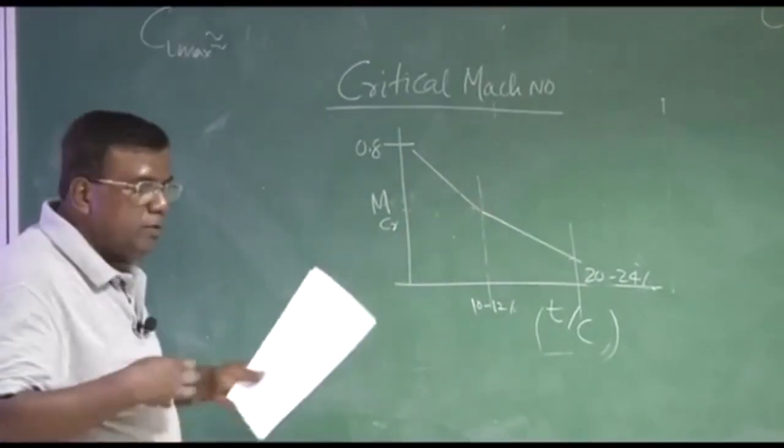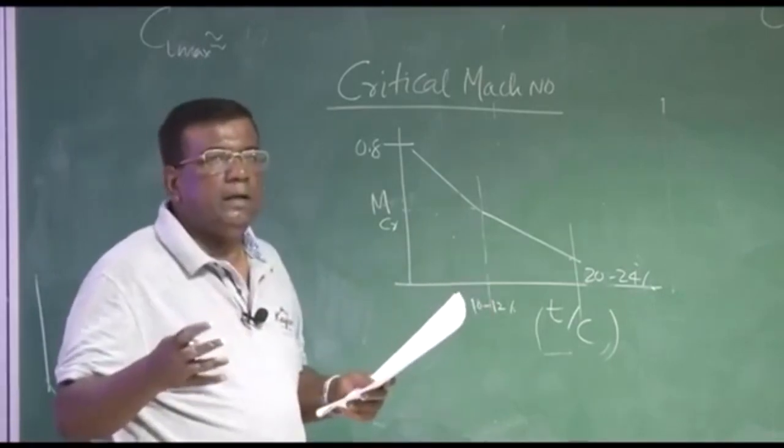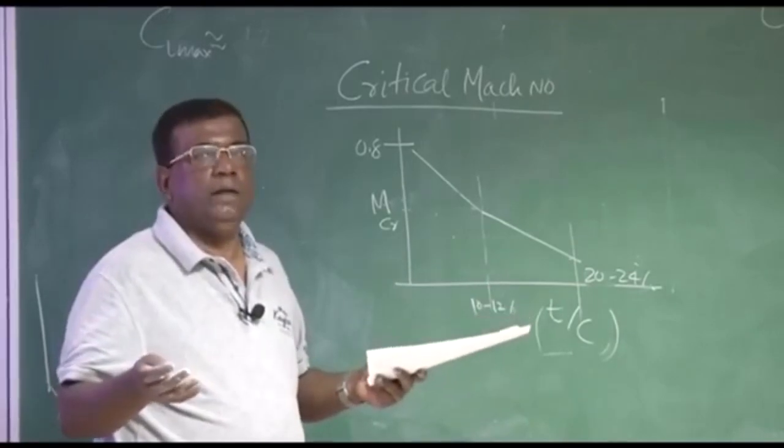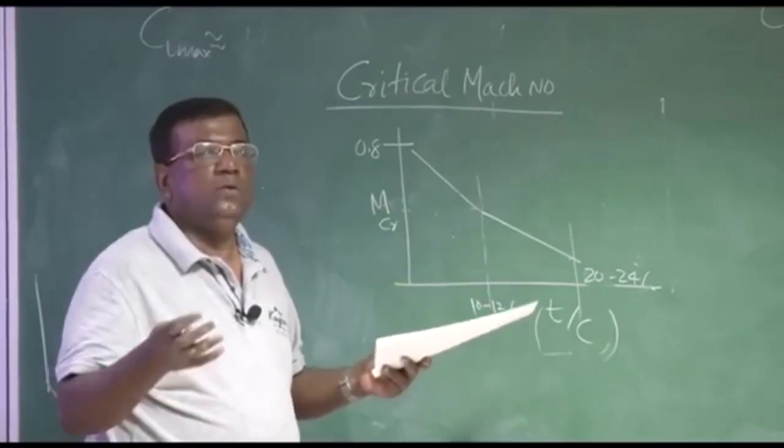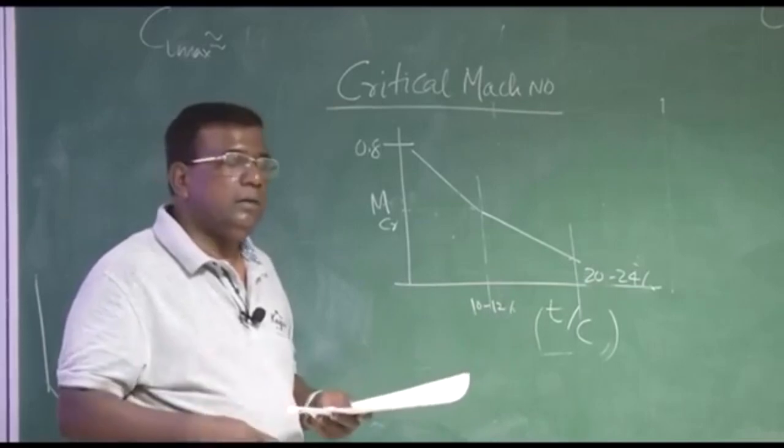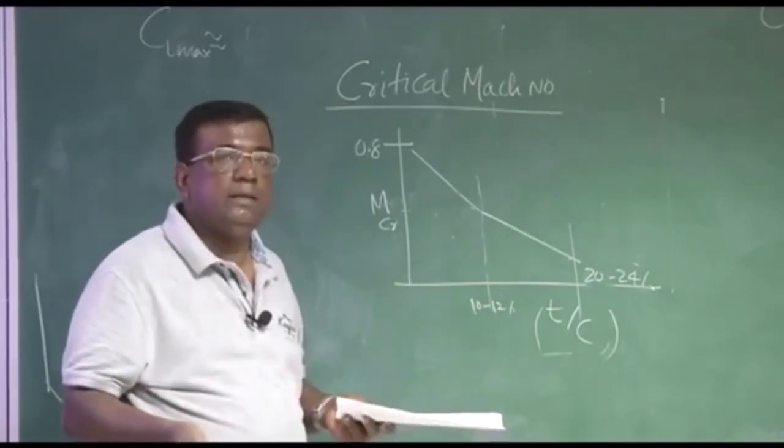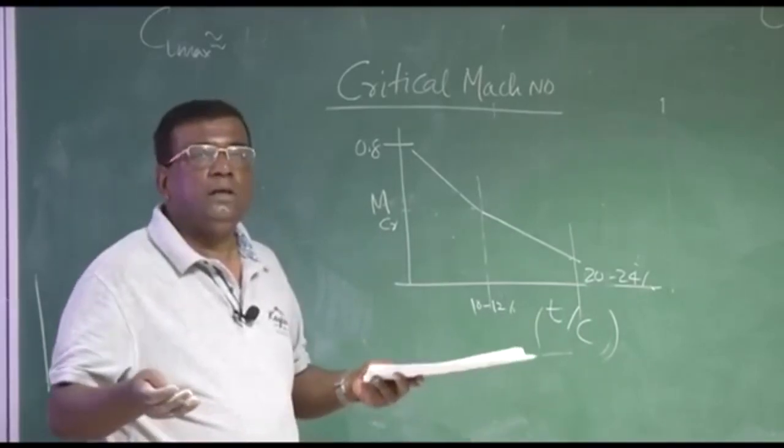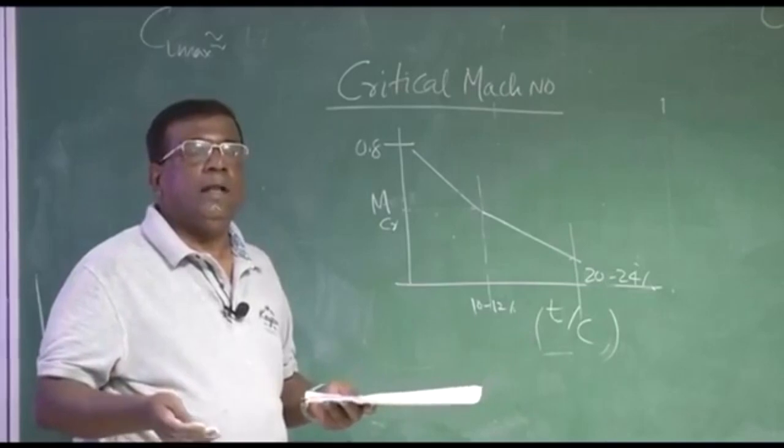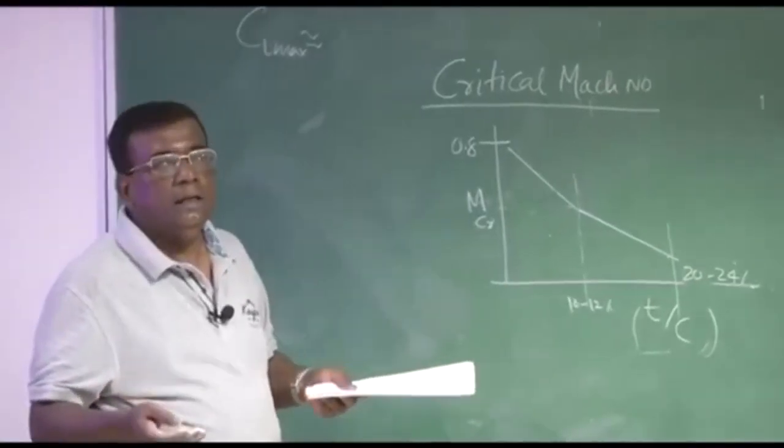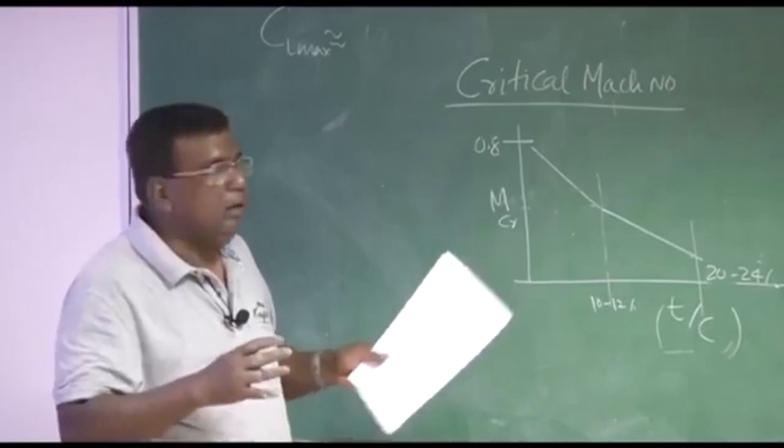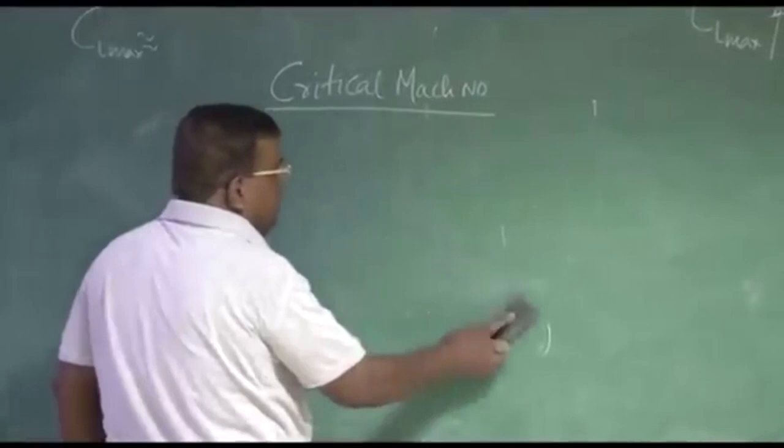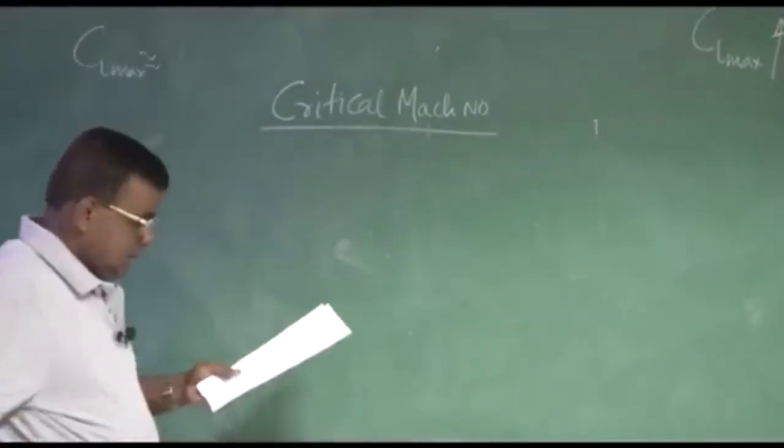Typically M critical changes with T by C, this sort of a variation you will find, and this may be around 20 to 24 percent T by C. There is a large drop in critical Mach number as you are going beyond 10 to 12 percent T by C, that is very important. So when you are trying to go for a high subsonic airplane, and if for some reason you want to go for a T by C higher, you know what sort of penalty you are going to pay. Either you, if you have no other option, if you are so destined you have to go for higher T by C, one understanding can help you try to give a sweep, but as you give sweep, you understand you are losing lift as well. So these are all sort of optimization goes on.